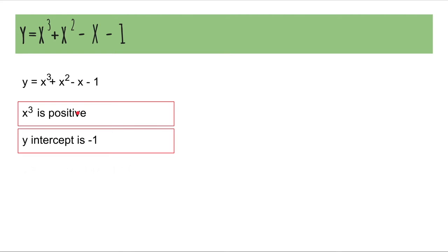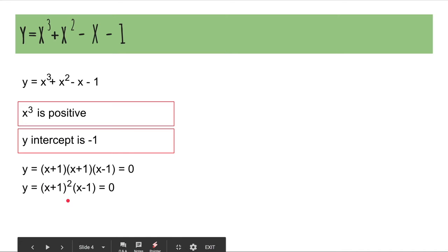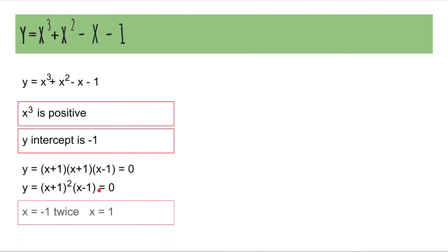But if you factorize it, you get x plus 1 as a factor twice, which can be written as y equals (x plus 1) squared multiplied by (x minus 1). So, your solutions are x is 1 and x is negative 1 twice. So, essentially, you only have two solutions: x is negative 1 and x is 1.